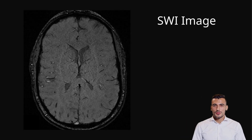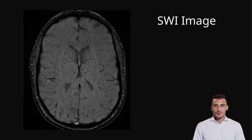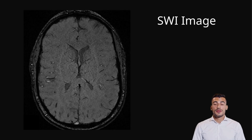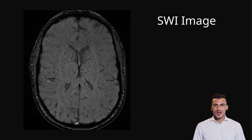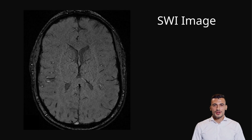So far we had two separate ingredients: the magnitude image, which shows the normal MRI signal and anatomy, and the phase image, which shows magnetic field changes caused by things like blood, iron, or calcium. In SWI, we actually combine them — we take the magnitude image and multiply it by a filtered version of the phase image. This multiplication enhances the darkening wherever there's magnetic disturbance. So the veins, microbleeds, or iron deposits that were faint on the magnitude image now appear darker and much clearer. This phenomenon is called blooming.